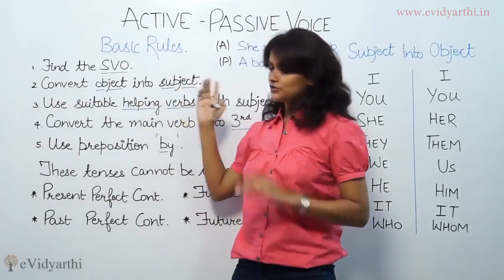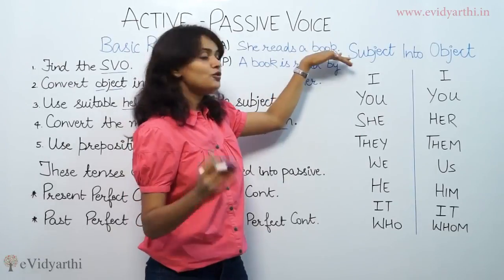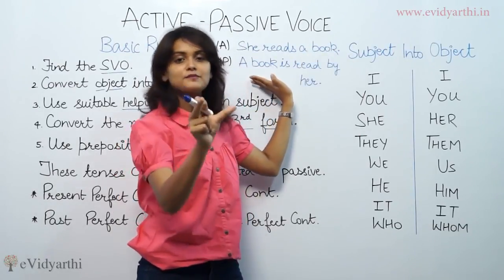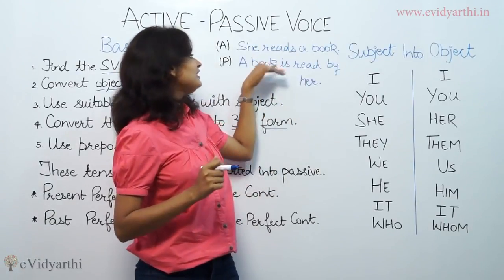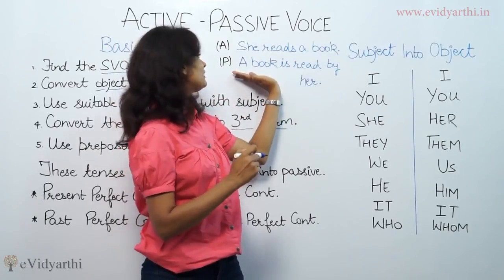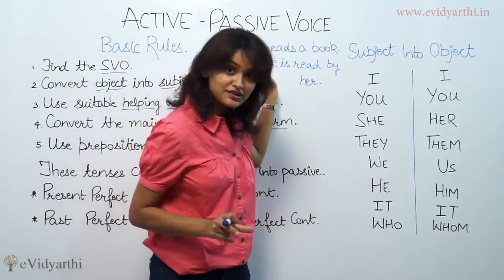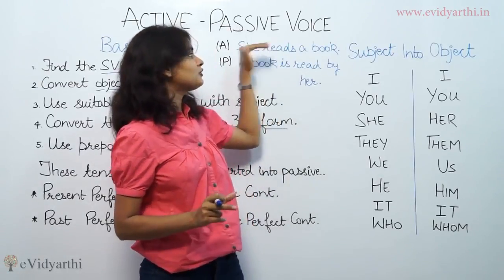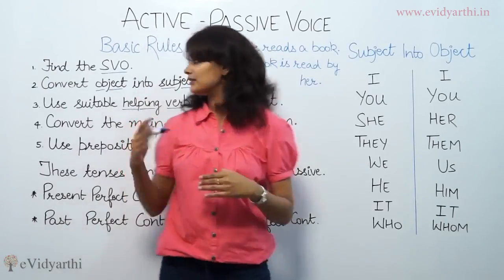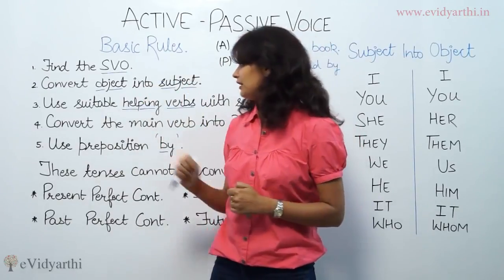Convert the object into subject. When we are converting, the active object becomes the passive subject. You will see that in the passive sentence, 'a book' becomes the subject of the sentence. So what did we do? We exchanged them — we converted the object into the subject.